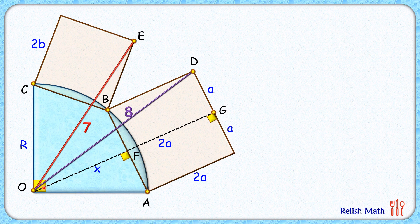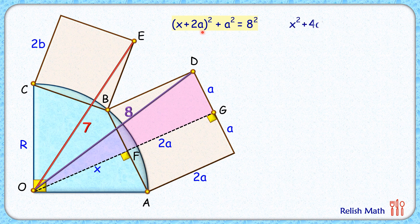Looking at triangle ODG and applying the Pythagorean theorem, we get: (x + 2a)² + a² = 8². Opening up the bracket gives: x² + 4a² + 4xa + a² = 64.